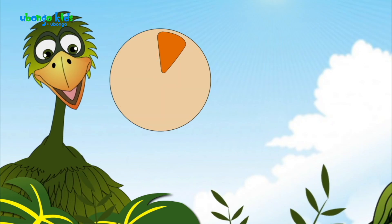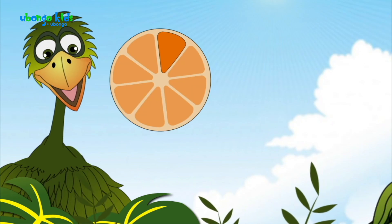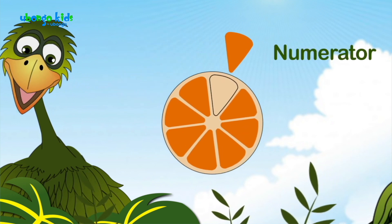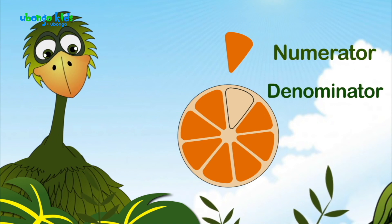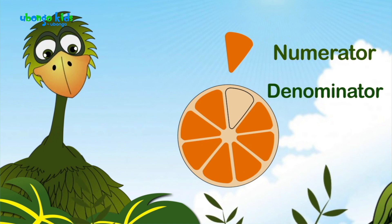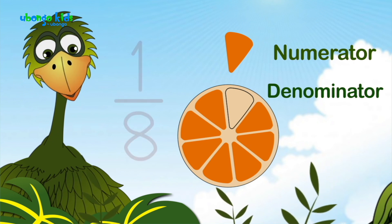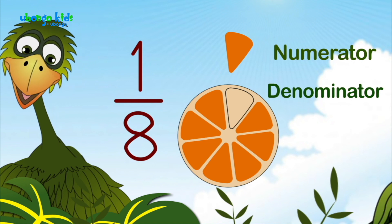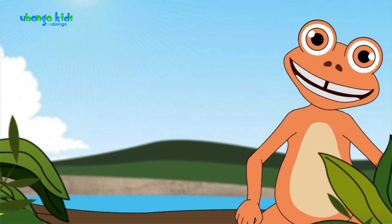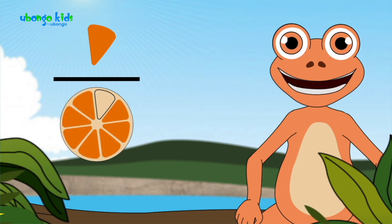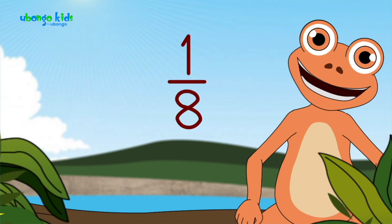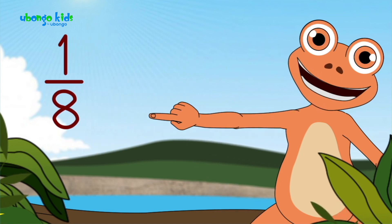I ate one out of eight pieces. So one is the numerator, and eight is the denominator. This section we call it one eighth — it just means one piece out of eight pieces. You ate one piece out of eight total pieces, and that is one eighth.